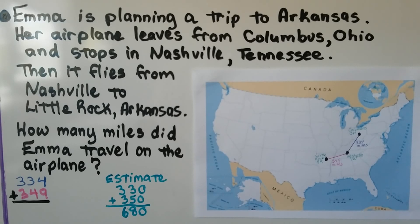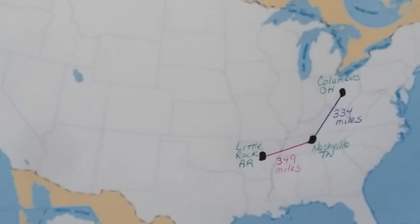Emma is planning a trip to Arkansas. Her airplane leaves from Columbus, Ohio and stops in Nashville, Tennessee. Then it flies from Nashville to Little Rock, Arkansas. How many miles did Emma travel on the airplane? Looking at the map, she traveled 334 miles to Nashville, then 349 miles to Little Rock. We need to add 334 plus 349.